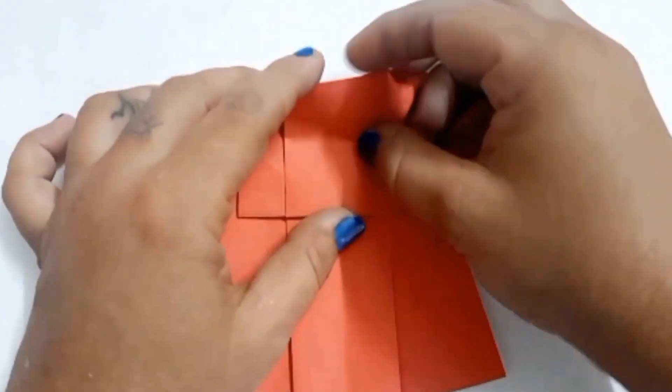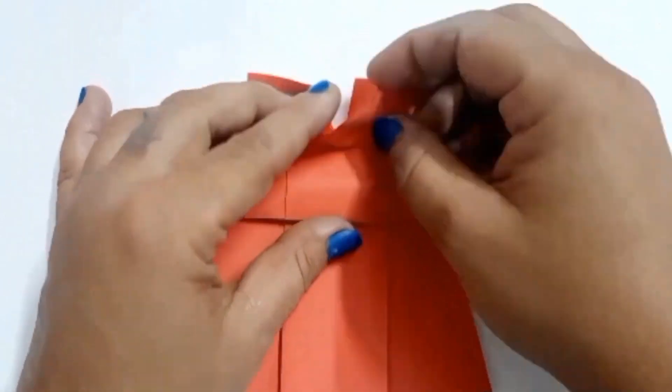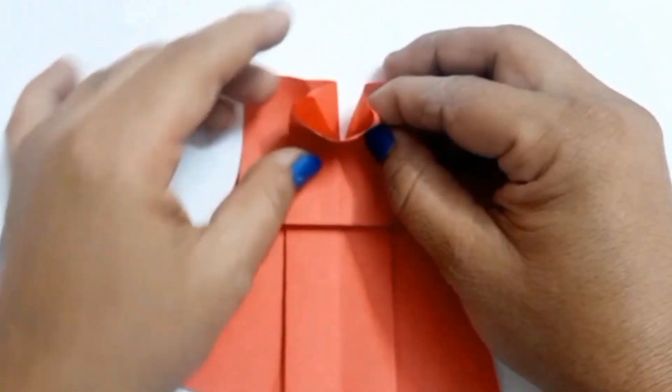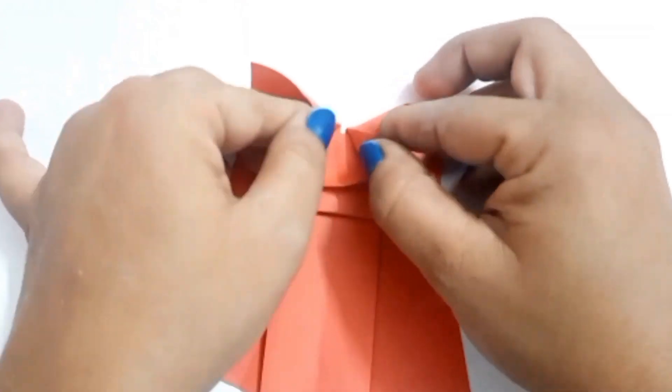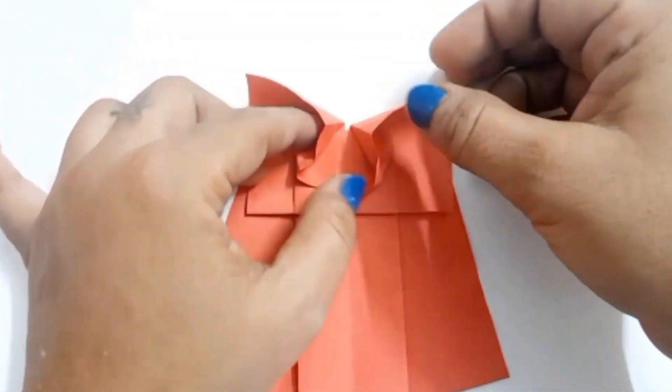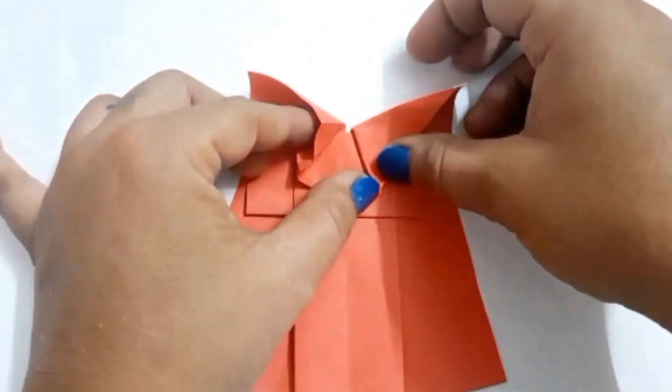Turn over and start folding like this. Put fingers on both triangles and press it to flatten them.